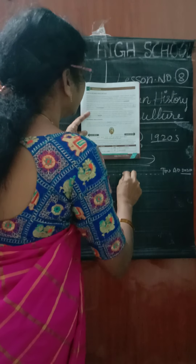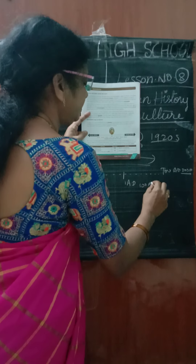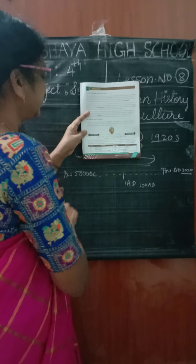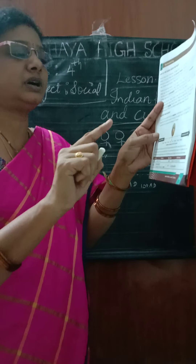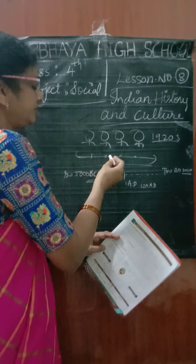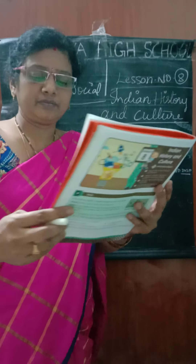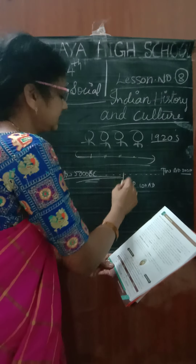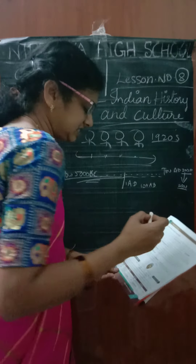In Class 3, you studied that we use timelines to remember and understand the past. A timeline shows the important events of the past in the order in which they happened. Let us now read about how the years are marked on the timeline — from 5000 BC towards AD 2020.